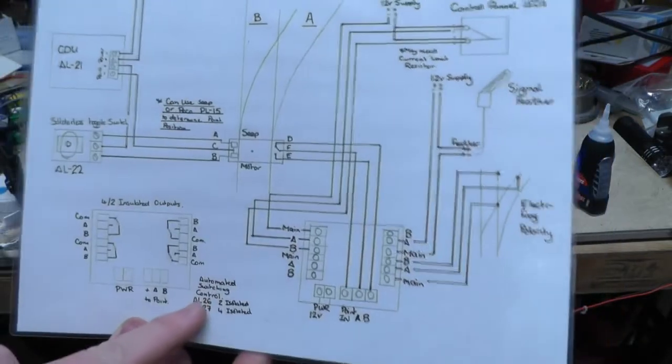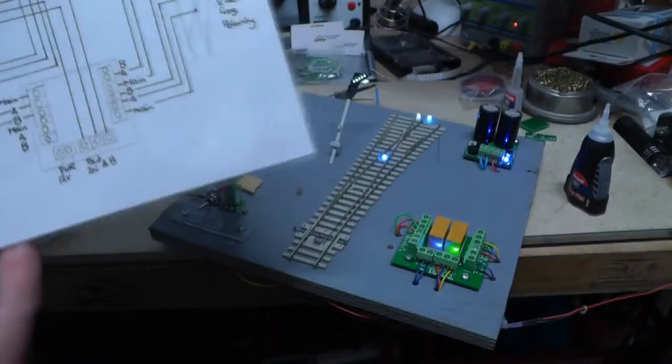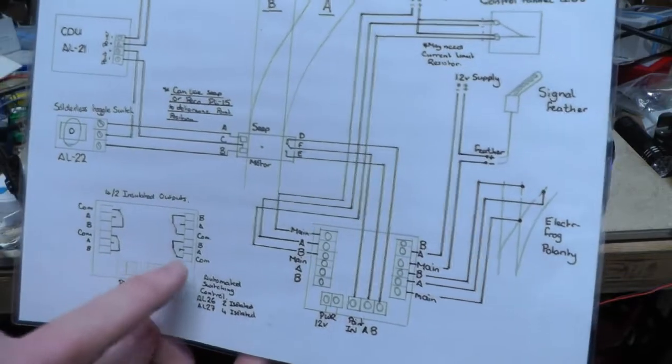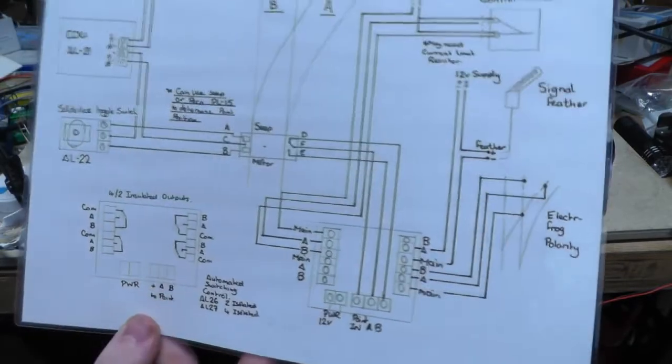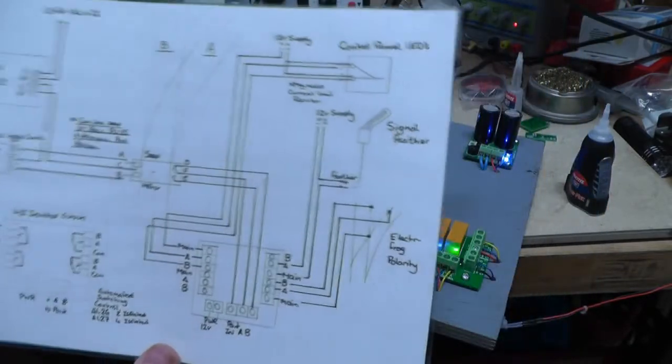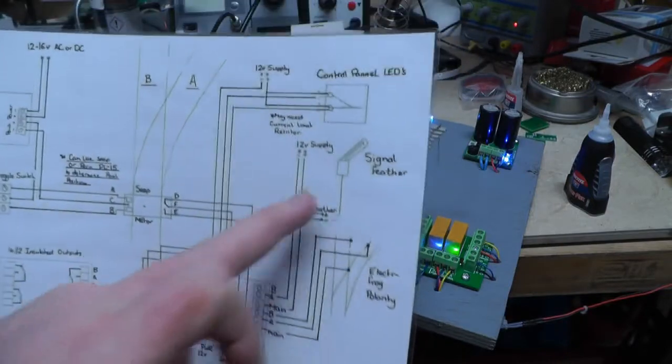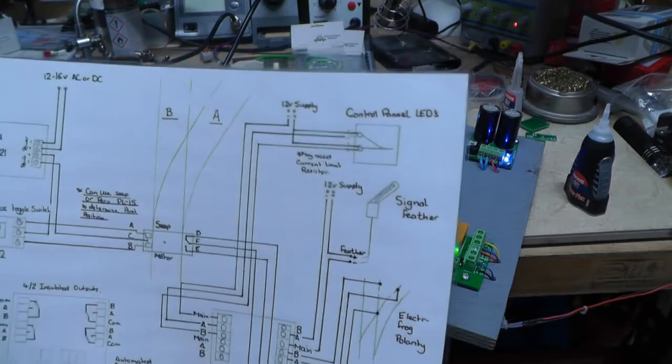There is also—we're working with the AL27 here, but there is an AL26 which only has two outputs. But two might be enough for your project. Obviously we've got four here: one for your electrofrog point, one for your feather, and one for your control panel.